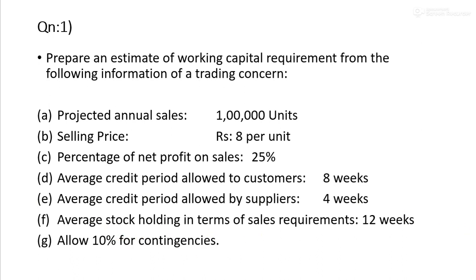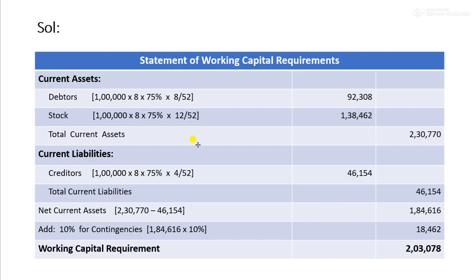For debtors: the selling price is given, net profit is 25%, so cost is 75%. The debtors amount is computed at cost, equivalent to 8 weeks credit out of 52 weeks.